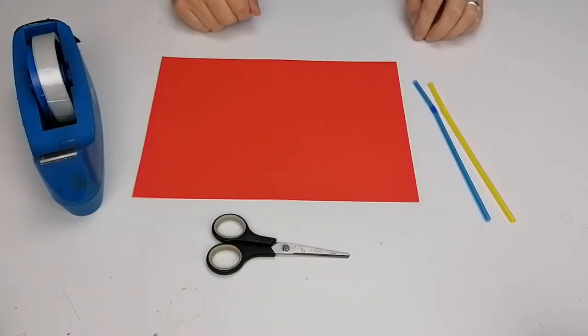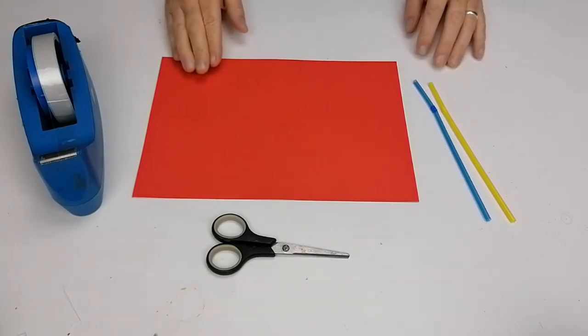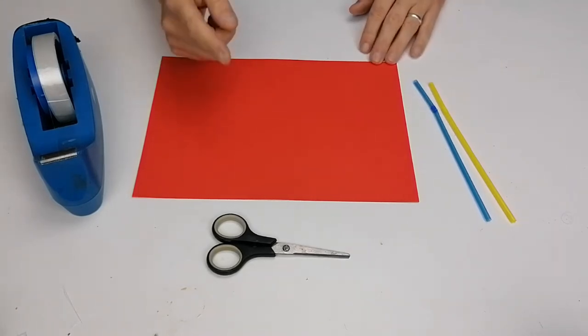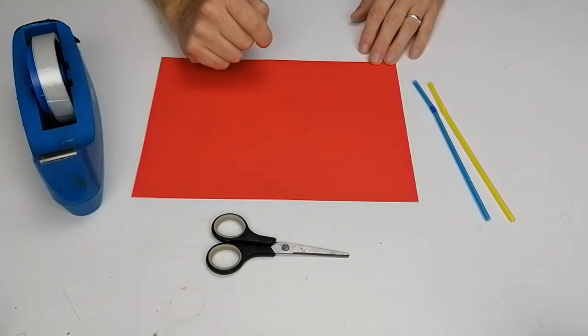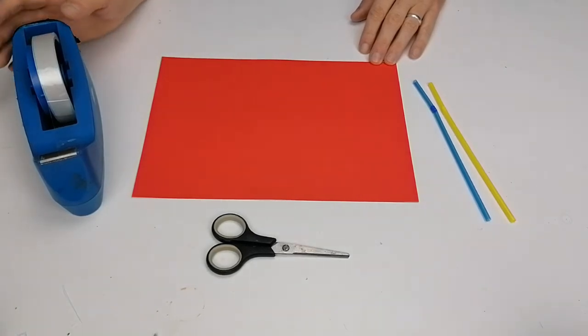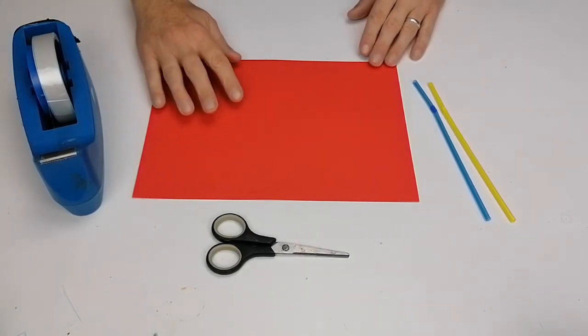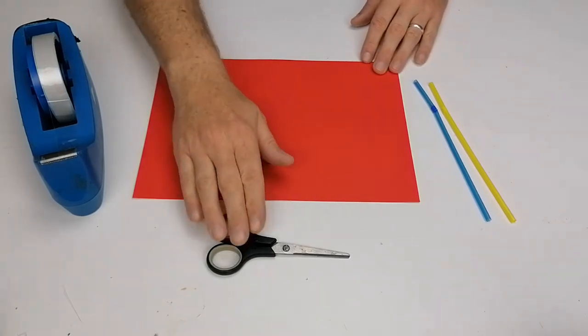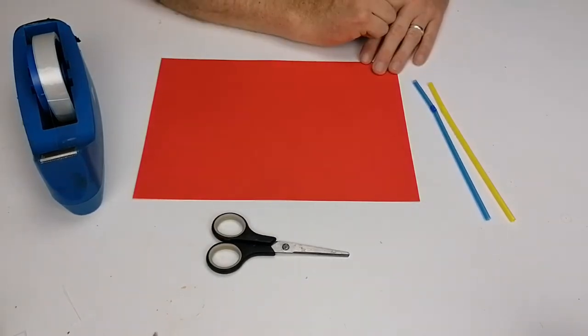In this activity we're going to make a hoop plane, which is basically a plane made from two straws and two hoops on the straws themselves. What you'll need for this is some sellotape, card, scissors, and two straws.